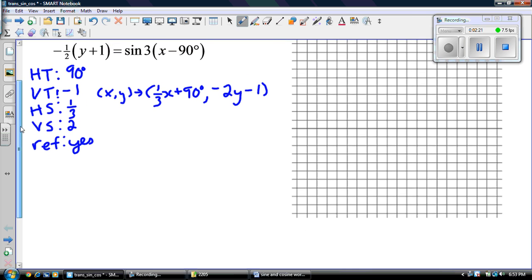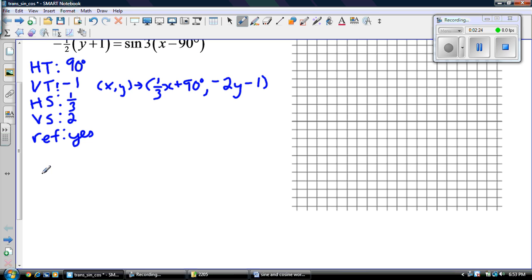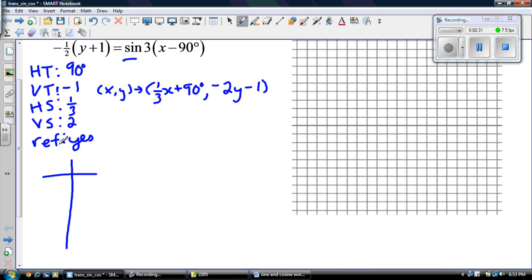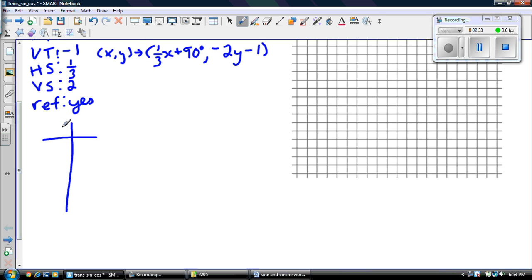Next step is to figure out the new table of values for this particular equation, this transformation. We start off with our base table of values for, because we have a sine function, we start with sine. So we have x, y, 0, 90, 180, 270, and 360. That is how sine begins, and we all know sine starts at 0. It's 0, 1, 0, negative 1, 0.